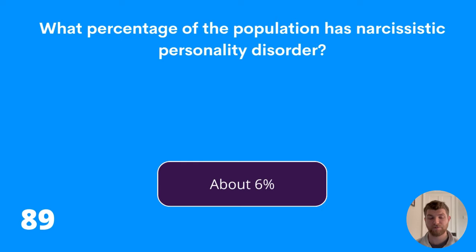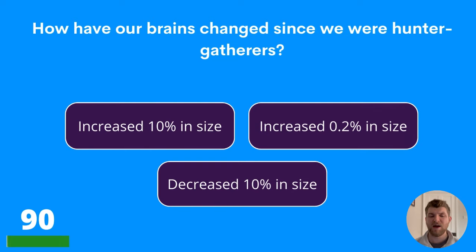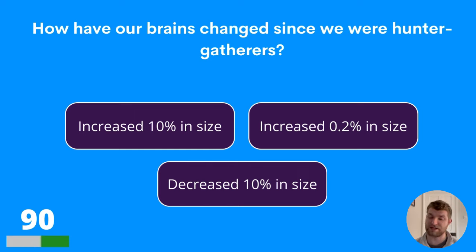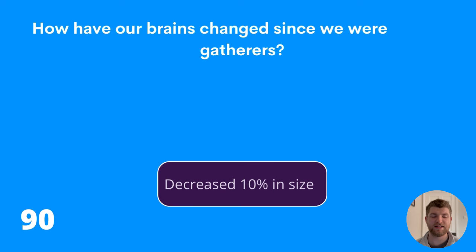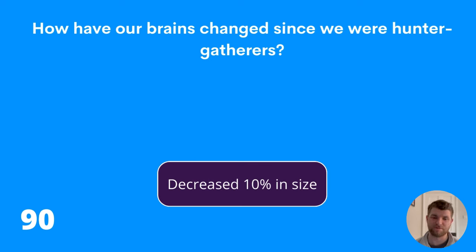Question ninety: how have our brains changed since we were hunter-gatherers? Increased 10% in size, increased 0.2% in size, or decreased 10% in size? The answer is decreased 10% in size.